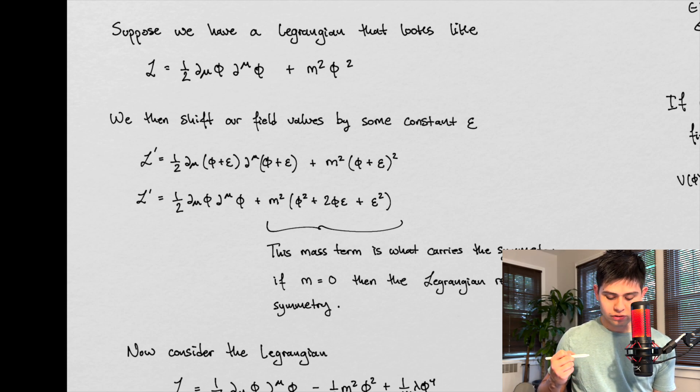If there's no mass to our scalar field, then our theory, or our Lagrangian, is symmetric upon a shift, a constant shift, a very simple shift.